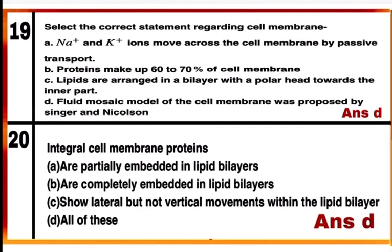Corrected statement C: lipids are arranged in a bilayer with polar heads towards outside. Corrected statement A: sodium ions and potassium ions move across the cell membrane by active transport. So mark D as the correct answer. Question 20: Integral cell membrane proteins — option D — all of these.